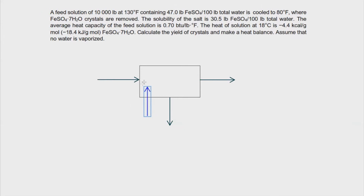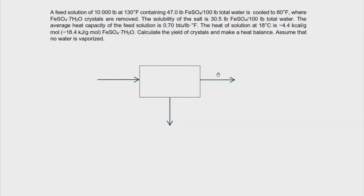You can add an arrow for the cooling water going out of the equipment. This is just for additional design, but you can remove that and leave only the main streams that you need. Technically, we don't need it when computing for the yield. Maybe if we compute the heat balance we'll use it, but for now let's just stick with the main streams.